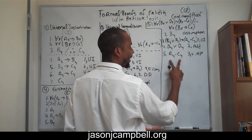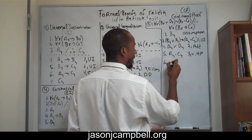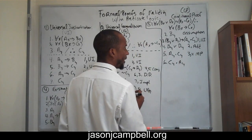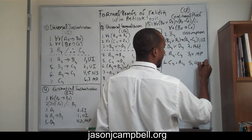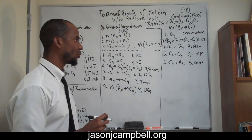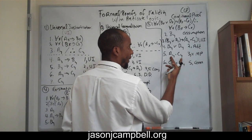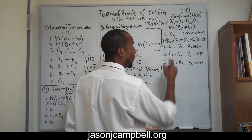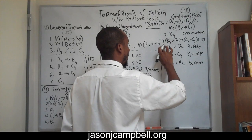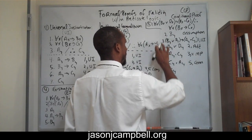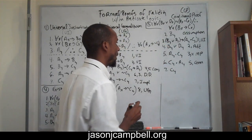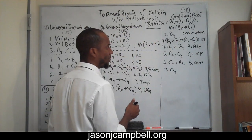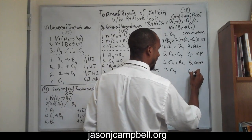Now we're close — we have B,Y isolated and we're trying to deduce C,Y. We can do commutation on line five to flip the conjunction and get C,Y and A,Y, which is line six by commutation. Then on line seven we do simplification on line six to isolate C,Y, which is exactly what we need.